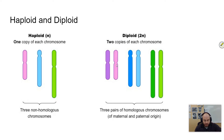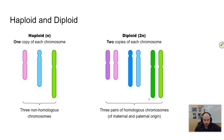They may have different versions of those genes, but they have the same genes, which is why they're called homologous pairs. These two are the same as each other, but different from another pair — though each pair matches within itself.